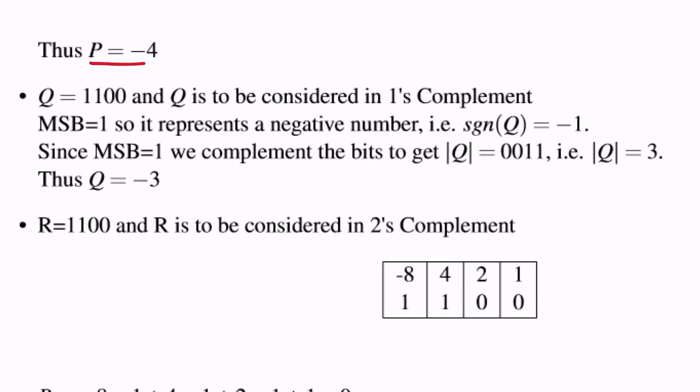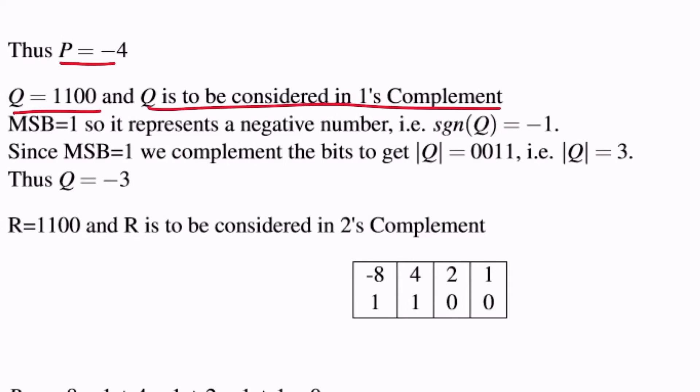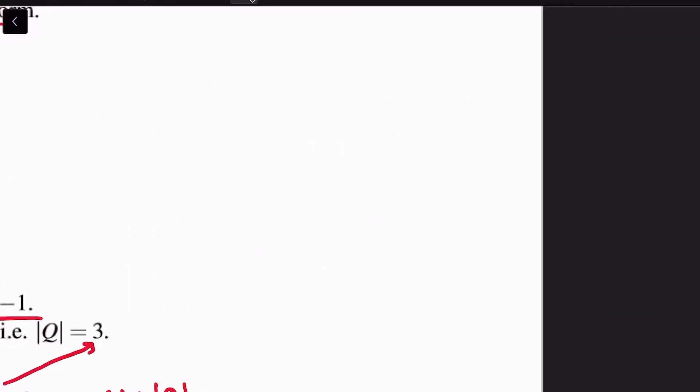And so Q is also equal to 1100 and Q is to be considered in the 1's complement form. Now the rules for 1's complement are as follows. The signum of Q, that is the sign of Q, is equal to plus 1 if the MSB bit of Q is equal to 0 and minus 1 if the MSB bit is equal to 1.